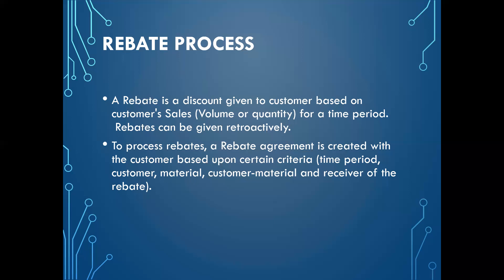There should be an agreement to reach 10,000 pieces of chocolate sales and for giving the 10% rebate. Both parties must agree, and we call this a rebate agreement. An offline sign-off will exist, and in SAP this rebate agreement is created with the customer based on criteria like time period, customer type — distributors or wholesalers — and specific materials.